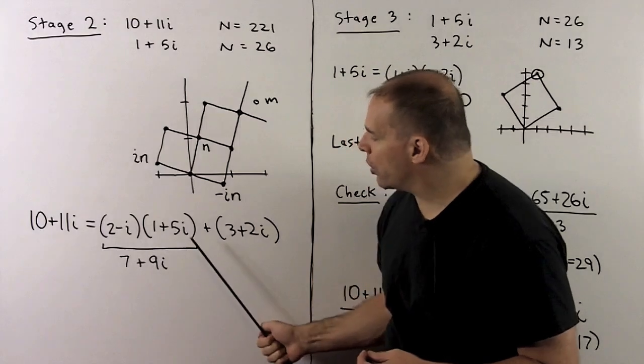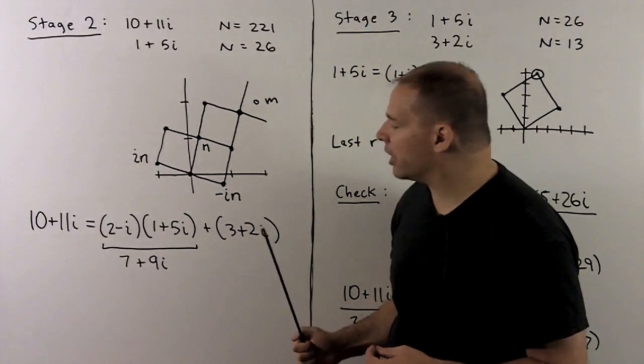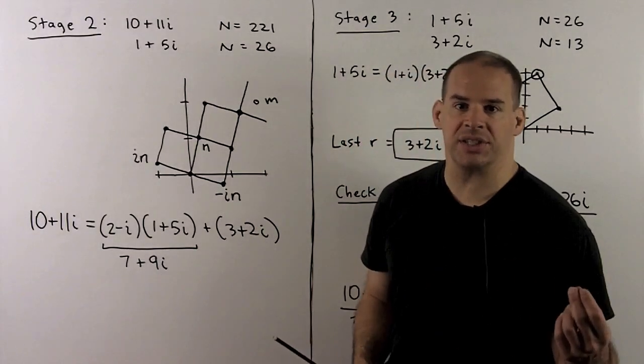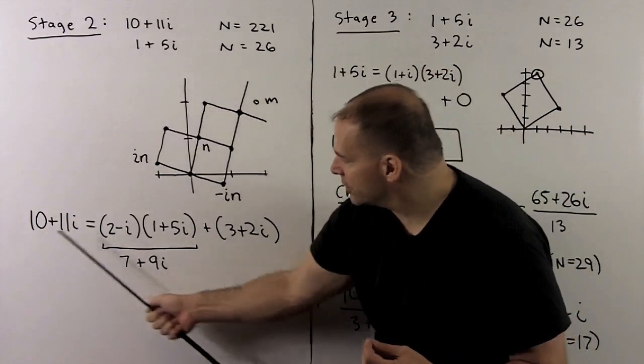When we work out what's left over, we get 3 plus 2i. And here is going to be 13, which is less than 26. So this is going to be the stage two equation.